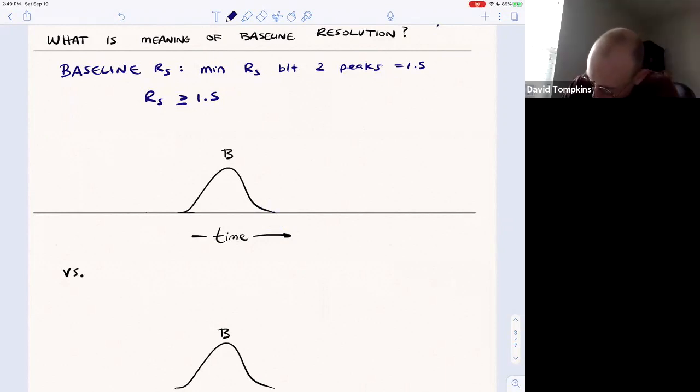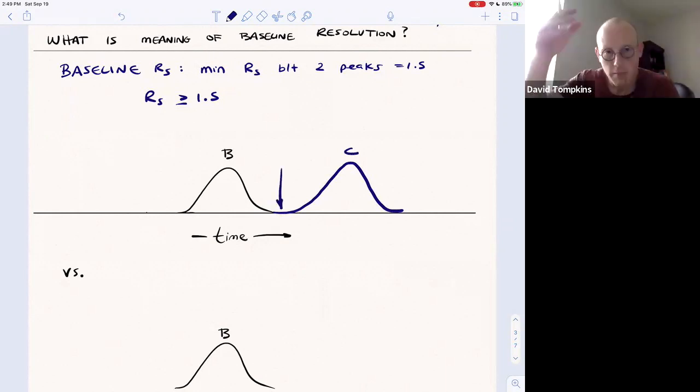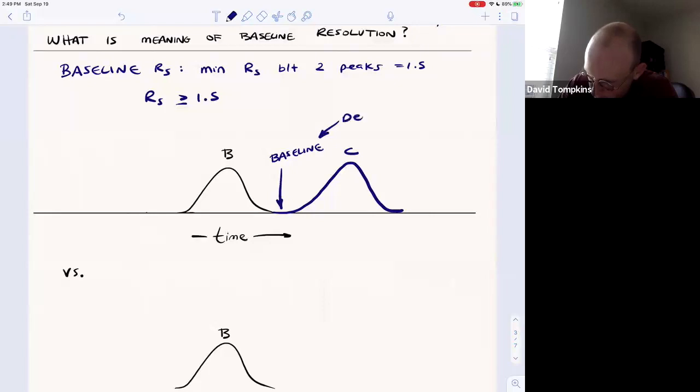Or the plot reaches the x axis in between the peaks. So if this is peak B and then we have another compound that eludes later, let's say it's compound C. Notice that the point between them where it touches the baseline or the detection is essentially zero at that point, that's going to be baseline resolved.